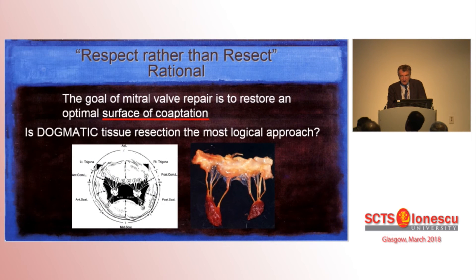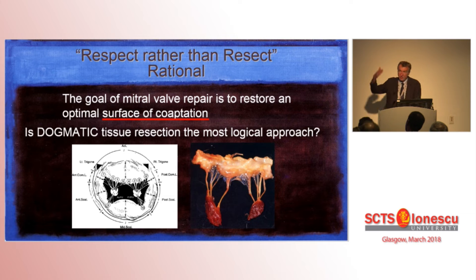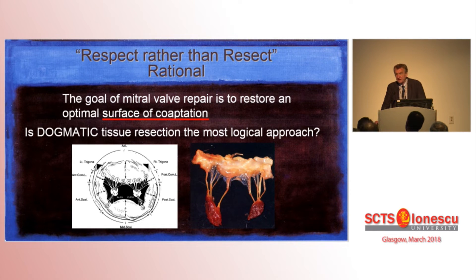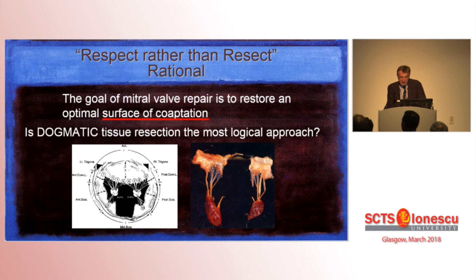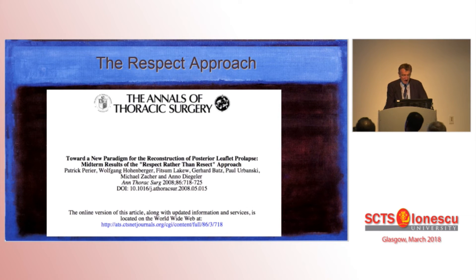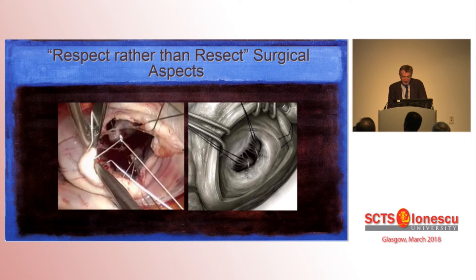But if you think about it — why do you resect? Because P2, the middle scallop, is the highest part of the posterior leaflet. Why is it the highest? Because this is where you have the highest stress on the leaflets and you need a higher surface of coaptation. So is it logical to simply resect this part? I thought it was not really logical, and I started to develop a new approach: to respect the leaflet, using Gore-Tex to cure the prolapse.